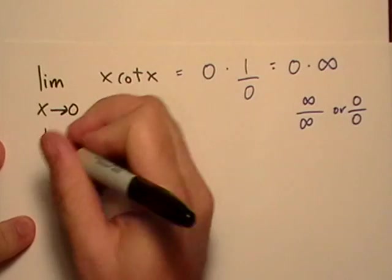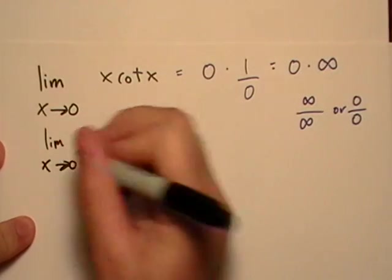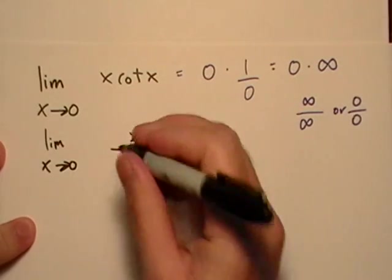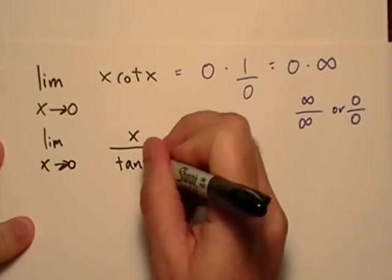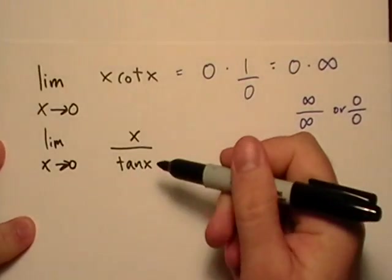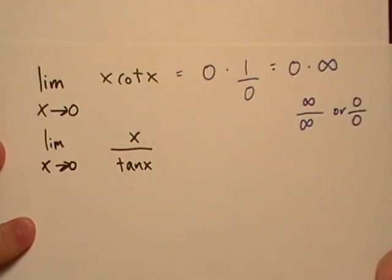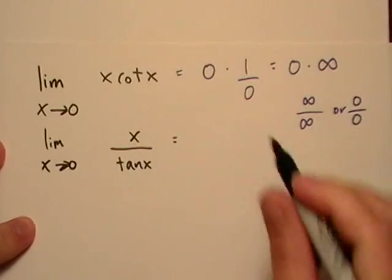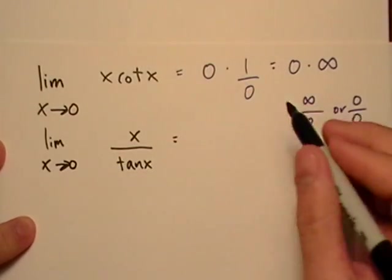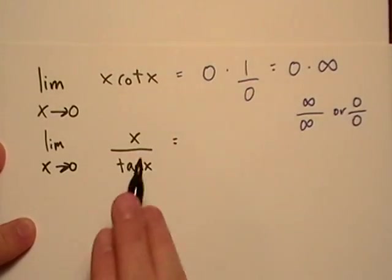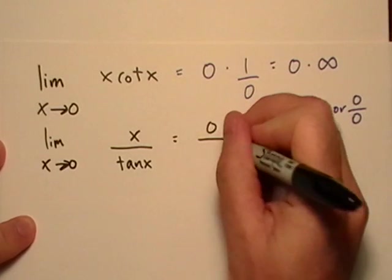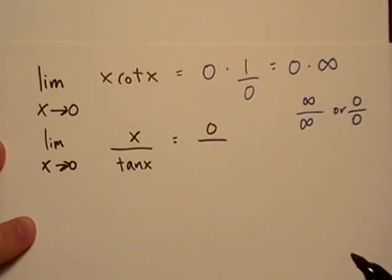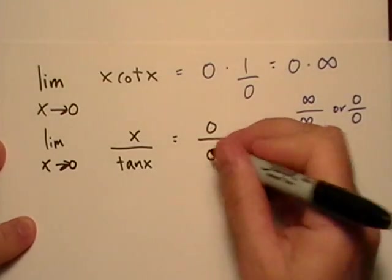So let's see if we can rewrite this. And what I'm going to do is, I'm just going to leave the x upstairs, and I'm just going to write tangent x. One over tangent is the same as cotangent, right? It's just the reciprocal. So now, okay, if x goes to zero, we get zero on top, and tangent, that's sine over cosine, so that'll be zero over one, which is also zero.